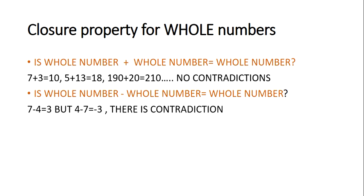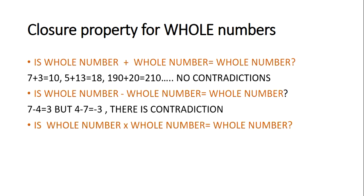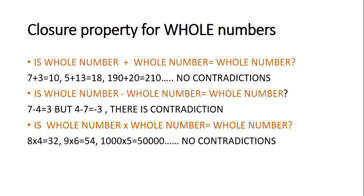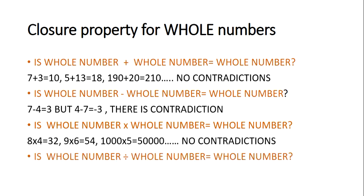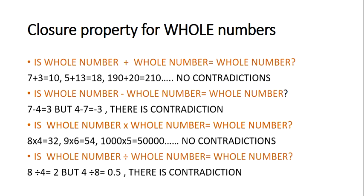When we subtract a smaller whole number from a bigger whole number we get a whole number, but if we subtract a bigger whole number from a smaller whole number we get a negative number, which is not a whole number — so there is a contradiction. For multiplication, if we multiply a whole number with a whole number you get a whole number, so there is no contradiction and whole numbers are closed under multiplication. But under division we get contradictions — for example 4 divided by 8 gives half, which is not a whole number. So just like natural numbers, whole numbers are not closed under subtraction and division, but they are closed under addition and multiplication.